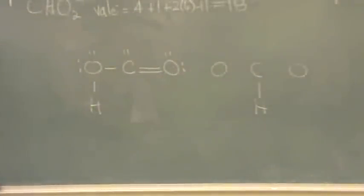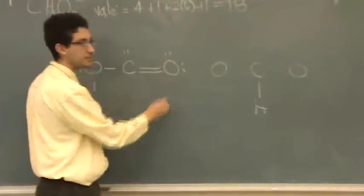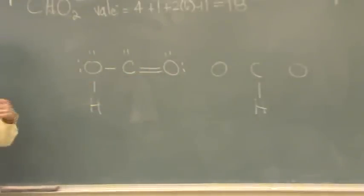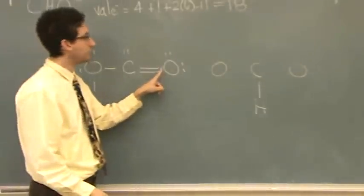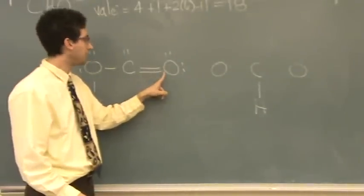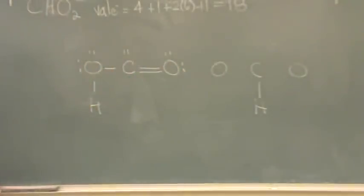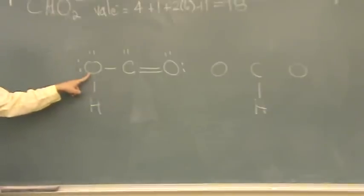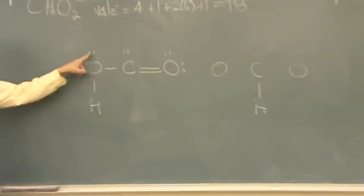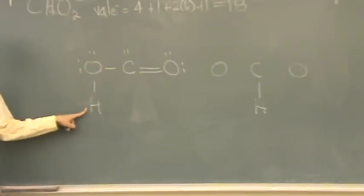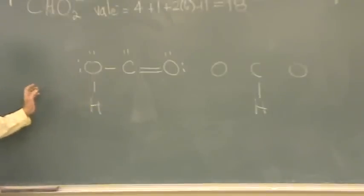Let's check our formal charges. My method: oxygen is in column six, and I count the points of intersection — all the things touching it. One, two, three, four, five, six. Column six, six things touching it — formal charge is zero. The other oxygen: also in column six, six things touching it — also zero. Hydrogen only needs one bond and it's happy; it doesn't have an octet, it has a two-tet, so it's zero.